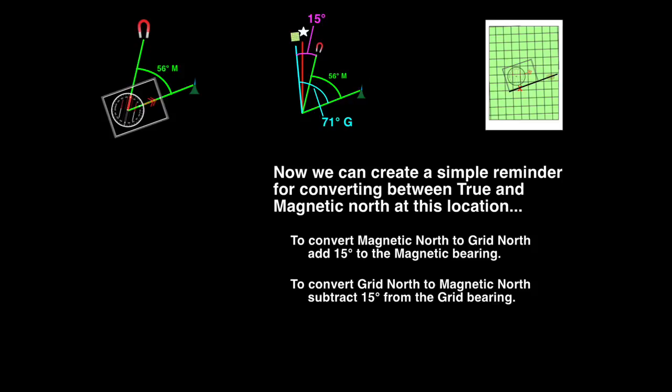Occasionally, when you have a small bearing or one that's close to 360 degrees, the conversion will result in an answer that is less than zero or larger than 360 degrees. For answers that are less than 360 degrees, add 360 degrees to the answer. For answers that are larger than 360 degrees, subtract 360 degrees from the answer.